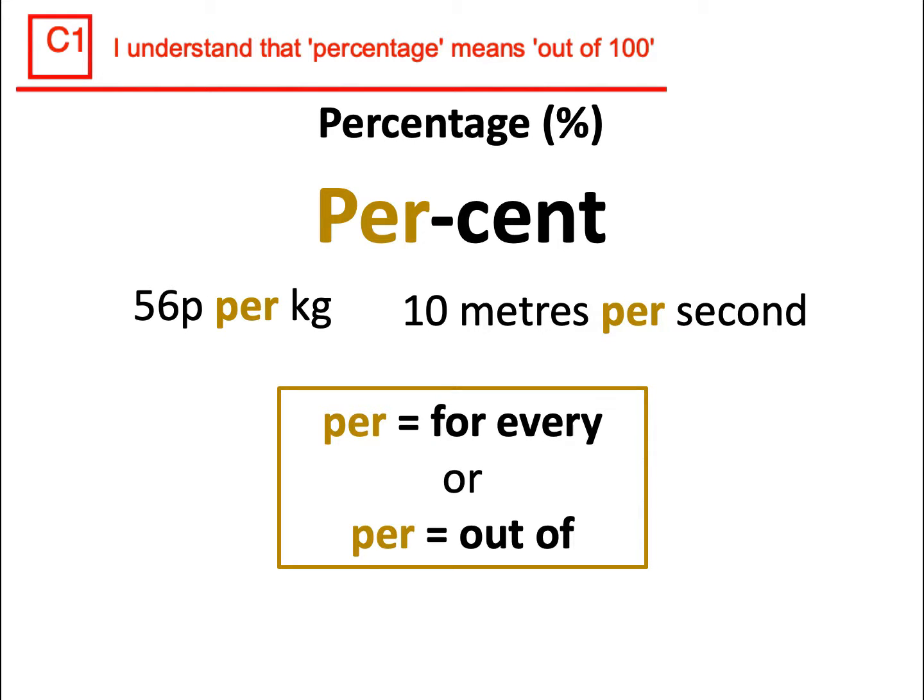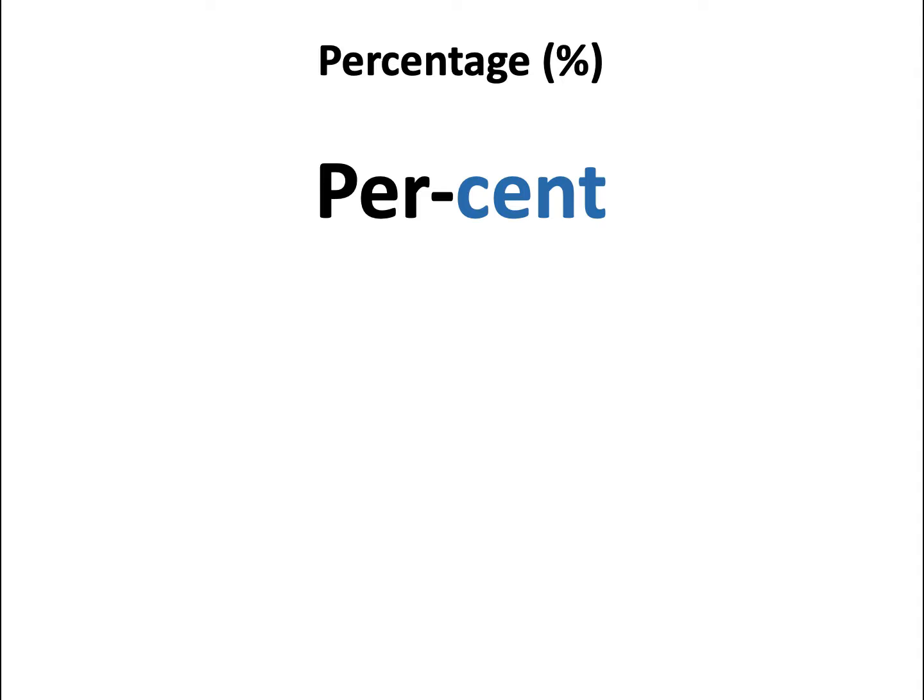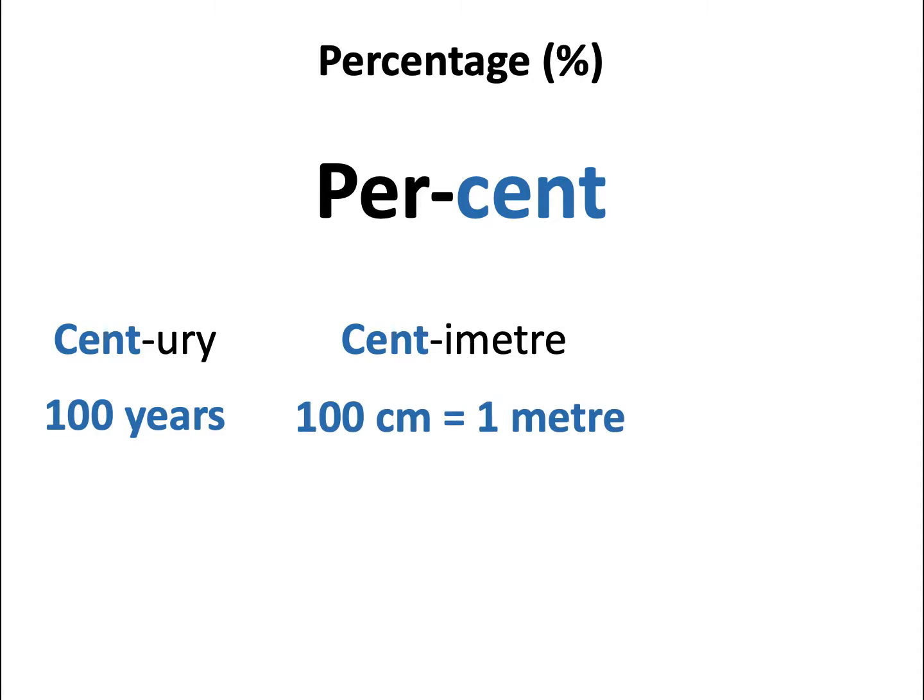56 pence for every kilogram, 10 meters for every second. How about cent? Where have you seen cent? Cent comes up in a few places such as century representing 100 years, centimeter where 100 centimeters makes a meter, cent as in American currency where 100 cents makes a dollar. What is the link between these words? They all have something to do with 100. So cent represents 100.